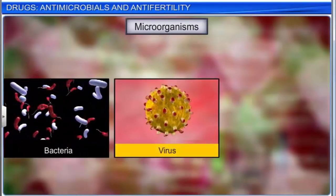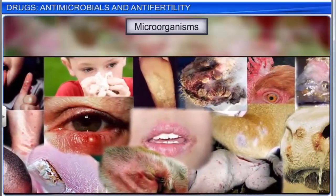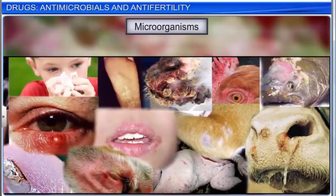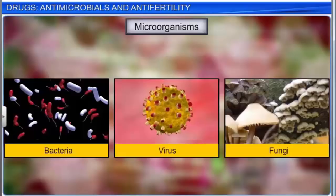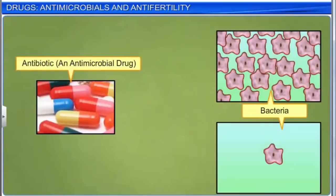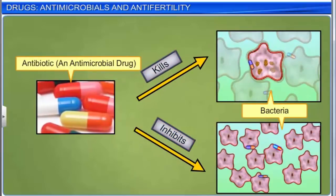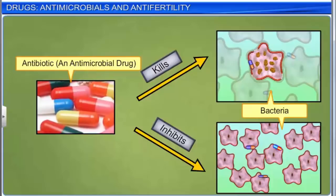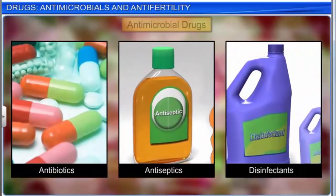Microorganisms such as bacteria, viruses, and fungi cause different diseases in human beings and animals. Such disease-causing microorganisms are called pathogens. An antimicrobial is a substance that kills or inhibits the growth of these microorganisms. Antibiotics, antiseptics, and disinfectants are antimicrobial drugs. Let's learn about antibiotics.